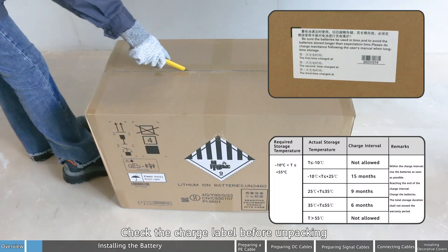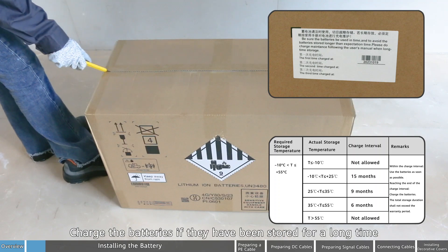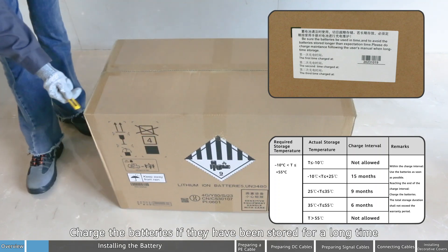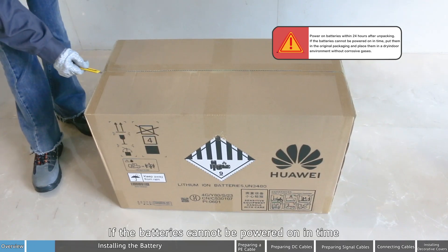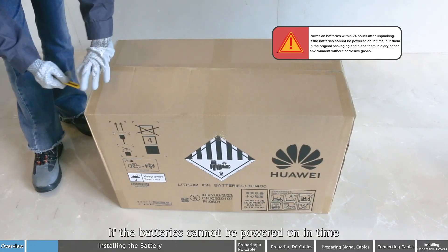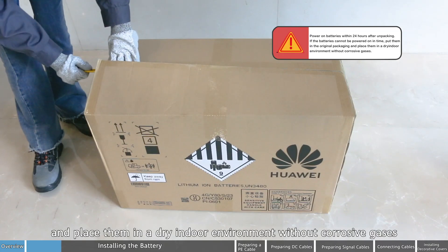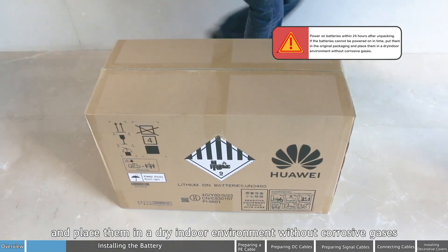Check the charge label before unpacking. Charge the batteries if they have been stored for a long time. Power on the batteries within 24 hours after unpacking. If the batteries cannot be powered on in time, put them in the original packaging and place them in a dry indoor environment without corrosive gases.